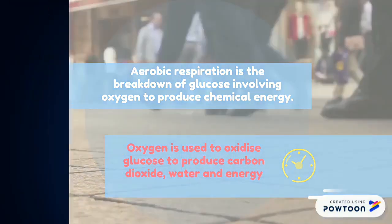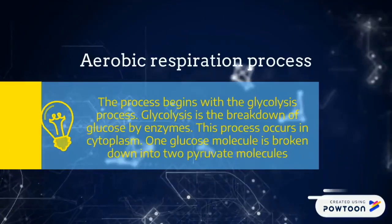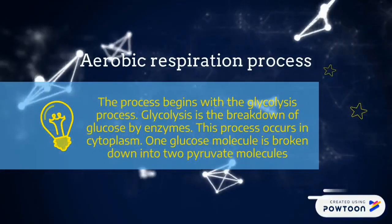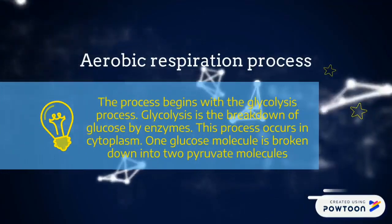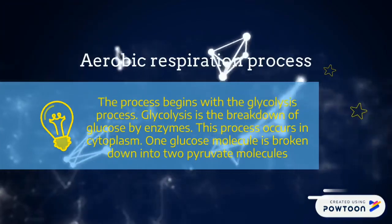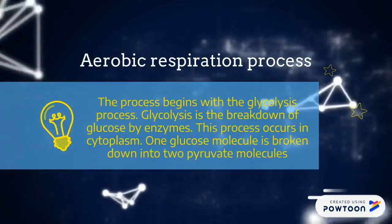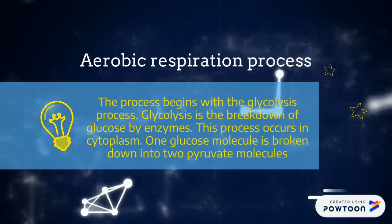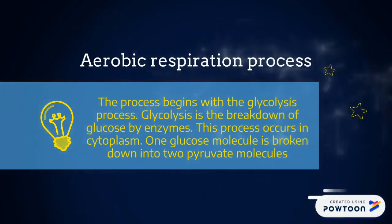The aerobic respiration begins with the glycolysis process. Glycolysis is the breakdown of glucose by enzymes. This process occurs in the cytoplasm. One glucose molecule is broken down into two pyruvate molecules.